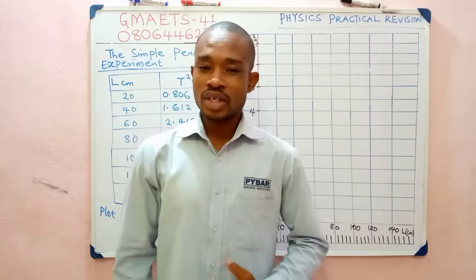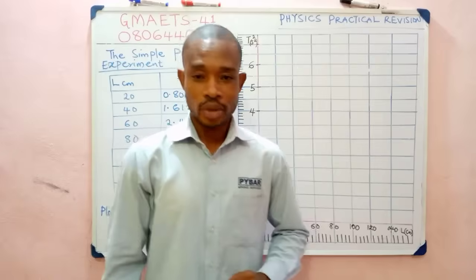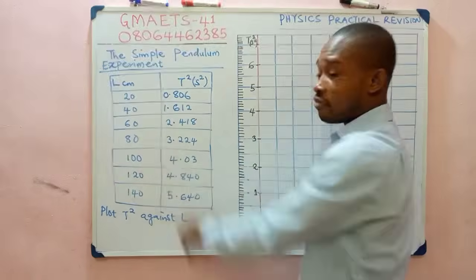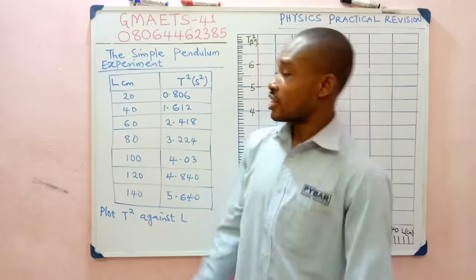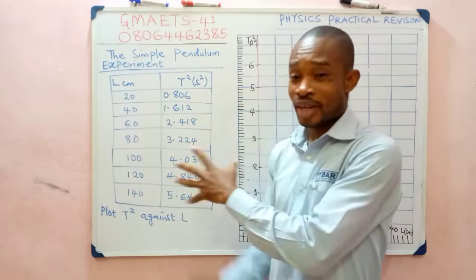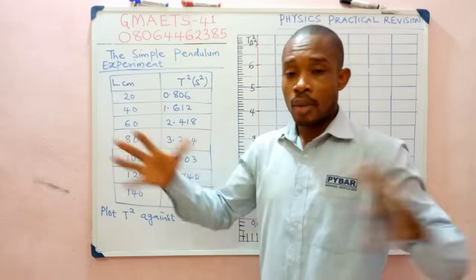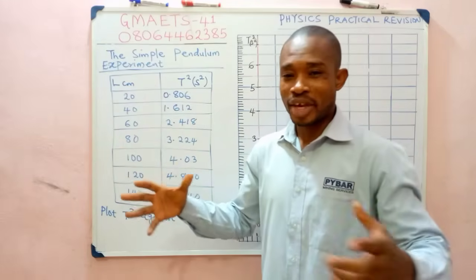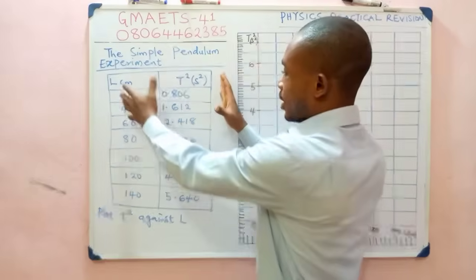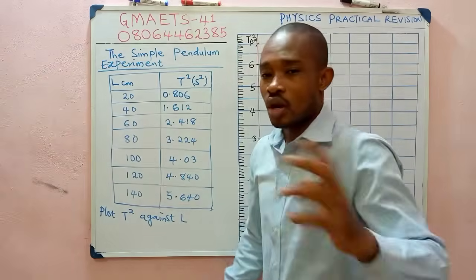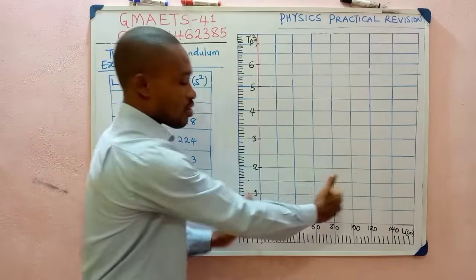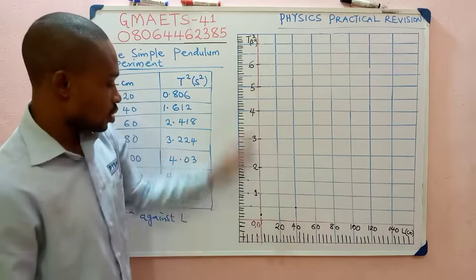In this video we are going to learn how to plot graphs. We have the simple pendulum experiment table of values here — just two columns shown, because after running the experiment we had a large table of values, but we only need to plot t² against L, so I extracted just those two columns of interest.